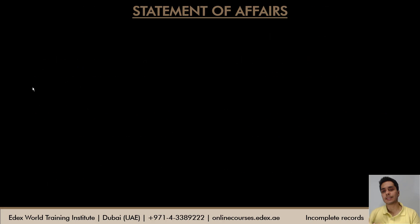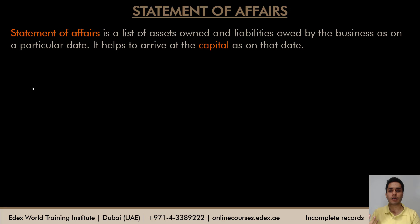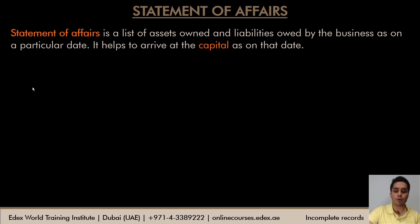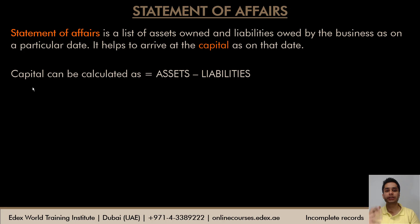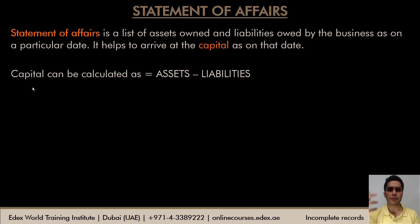The statement of affairs is a statement showing the assets and liabilities of the business on a particular date. It is prepared to calculate the capital on that date. Using the accounting equation — capital equals assets minus liabilities — the statement of affairs lists all assets and liabilities, and the difference gives the capital.